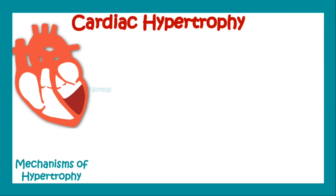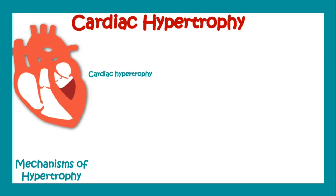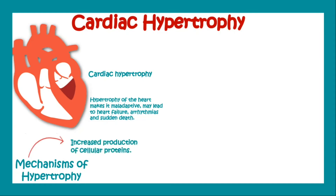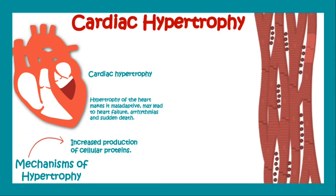Pathological hypertrophy includes cardiac hypertrophy secondary to hypertension or aortic stenosis, where there is increased demand for increased pumping of the heart. This hypertrophy of the heart is maladaptive, leading to heart failure, arrhythmias, and sudden death. The mechanism involves increased production of cellular proteins.